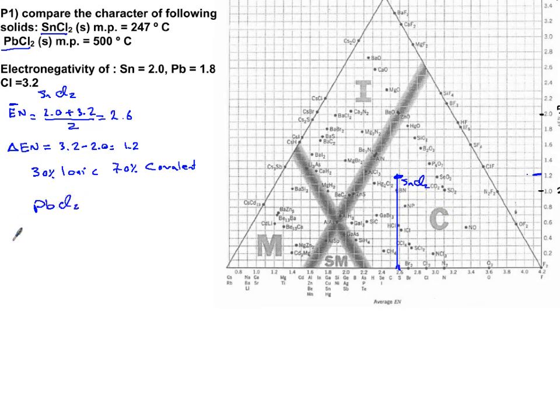Now let's look at lead 2 chloride. PbCl2, we're going to do the same thing. The average electronegativity is that of lead plus chlorine, 3.2 plus 1.8, divide by 2. And you get 5 divide by 2, 2.5. So, 2.5 is right here.